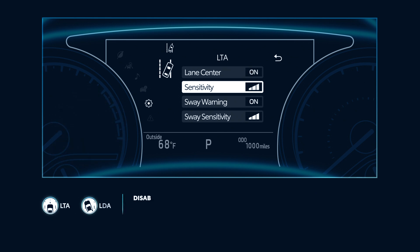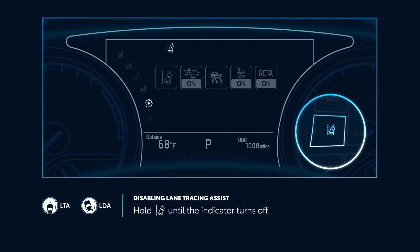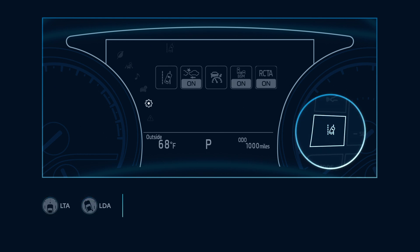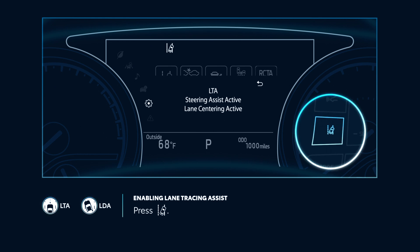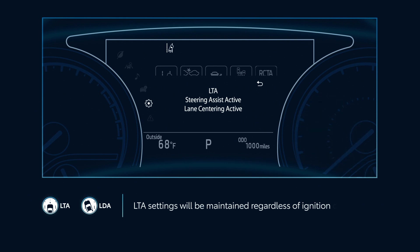To disable Lane Tracing Assist entirely, press and hold the LTA button on the steering wheel until the indicator on the instrument panel turns off. Press the button again to reactivate the system. Please note that LTA settings will be maintained regardless of ignition cycle.